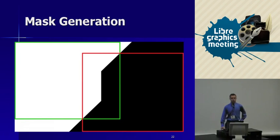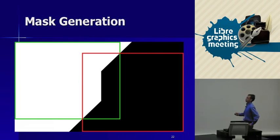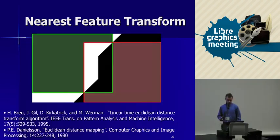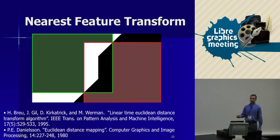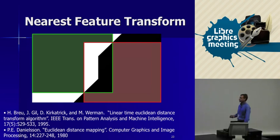Another interesting part of nblend is how it makes the masks. You have a green image and a red image overlapping in some arbitrary way, and you want to find the seam line to blend between them. This is done using a nearest feature transform: for each pixel in the intersection region, it determines whether that pixel is closer to the green area or the red area. White pixels mean closer to green; black pixels mean closer to red.